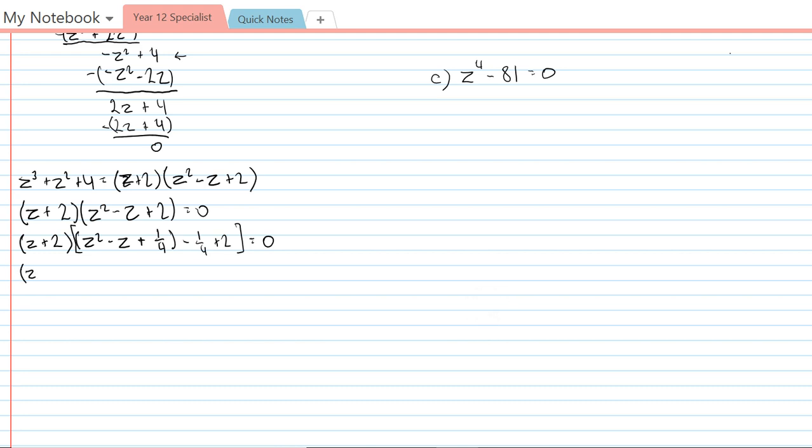So next, z + 2. And here we now have (z - 1/2)² plus 7/4. I need to turn this into a difference of two squares. I should make sure that's still equal to zero. So turning that into a difference of two squares, I'm going to get z + 2 times (z - 1/2)² - (√7/2 i)². And now we have difference of two squares, so we can finally finish factorizing that.